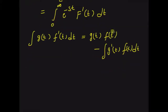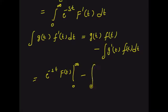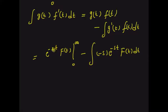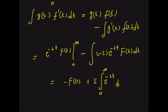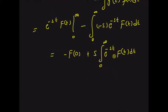By using this formula, we can write this integral as e^(−st) multiplied by f(t), evaluated from 0 to infinity, minus the integral of the derivative of e^(−st), which is −s·e^(−st), times f(t) dt. Clearly, at t equal to infinity this is 0, and at t equal to 0 this is f(0). So this equals −f(0) plus s times the integral from 0 to infinity of e^(−st)·f(t) dt, which by definition is the Laplace transform F(s). So this equals s·F(s) − f(0).